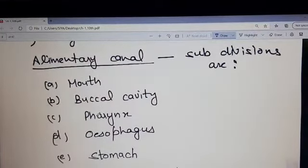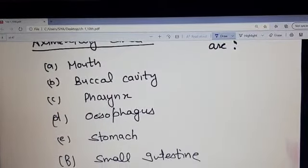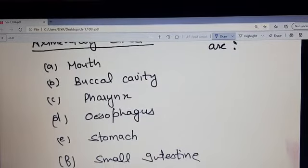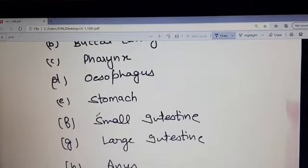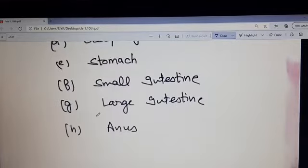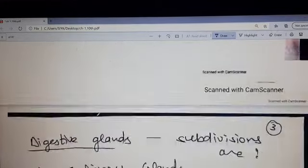In the alimentary canal: mouth, buccal cavity, pharynx, esophagus, stomach, small intestine, large intestine and anus.